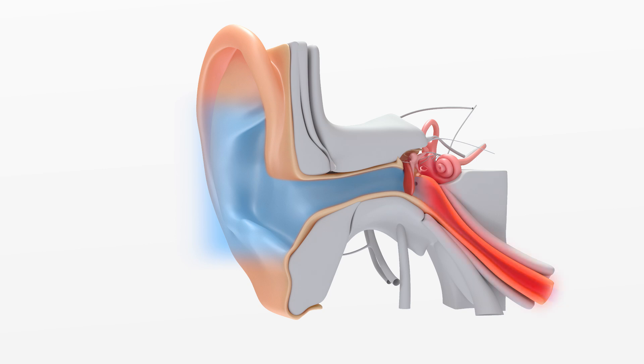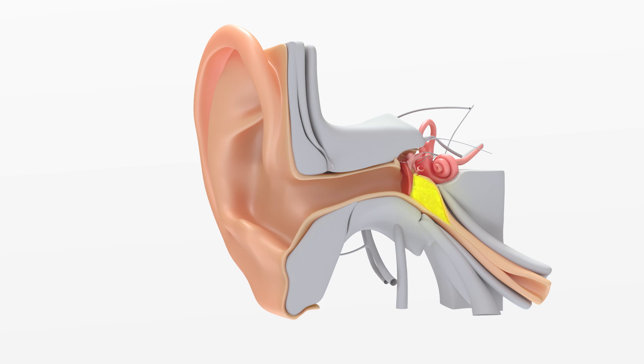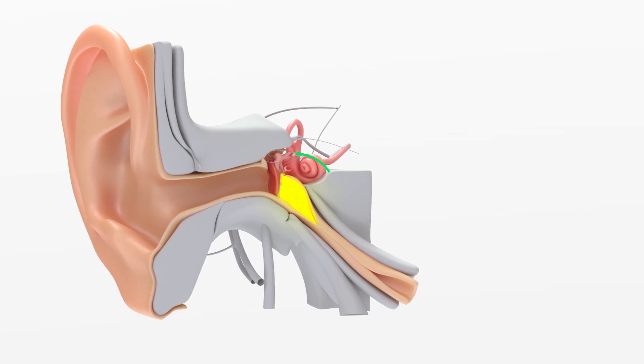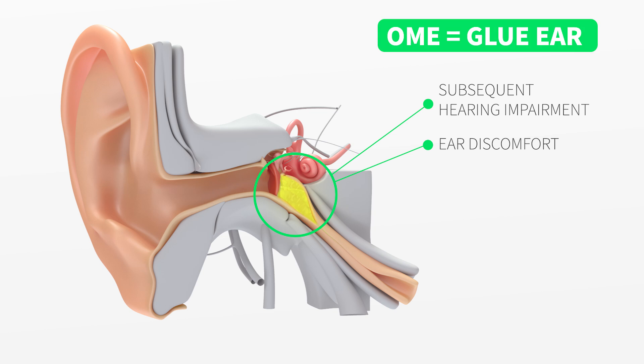If the eustachian tube is blocked or swollen and not open properly, a vacuum will be developed, drawing fluid into the middle ear. This condition may cause a sticky, glue-like effusion to develop in the middle ear, with subsequent hearing impairment and ear discomfort, known as otitis media with effusion OME, or glue ear.